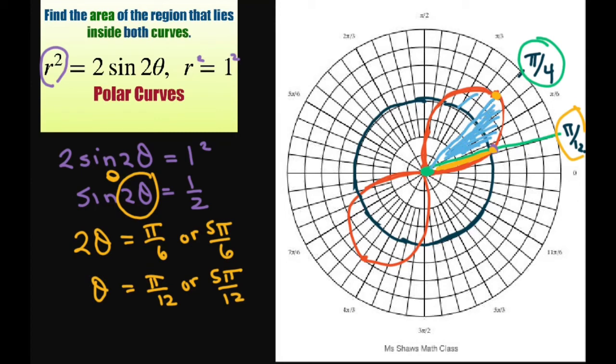So for our limits, we're going to go from 0 to π/12. Because then we're going from 0 to π/12, we're looking at this part.